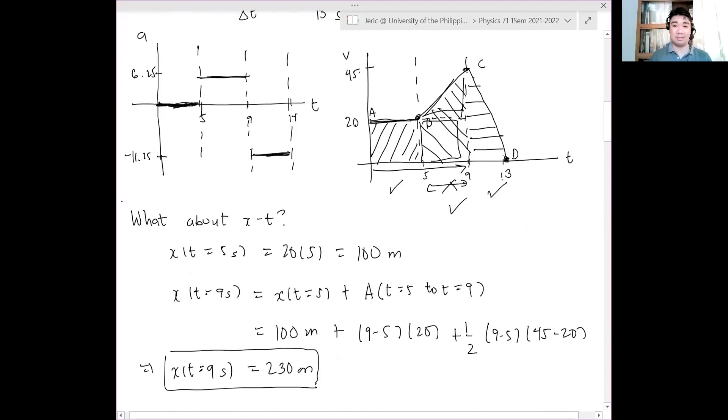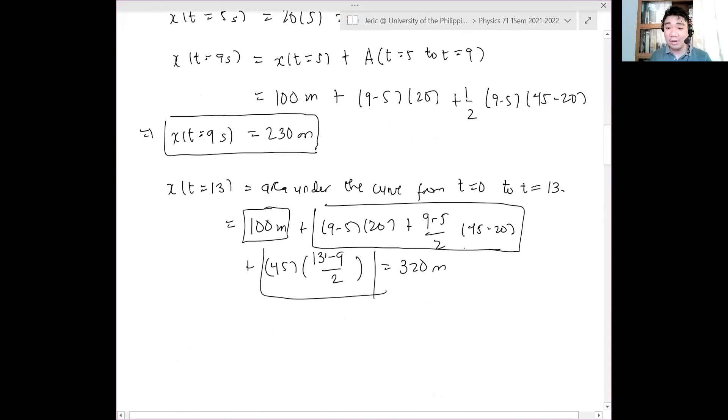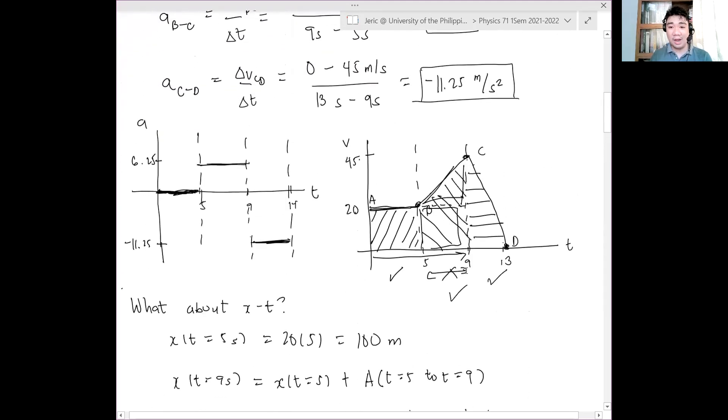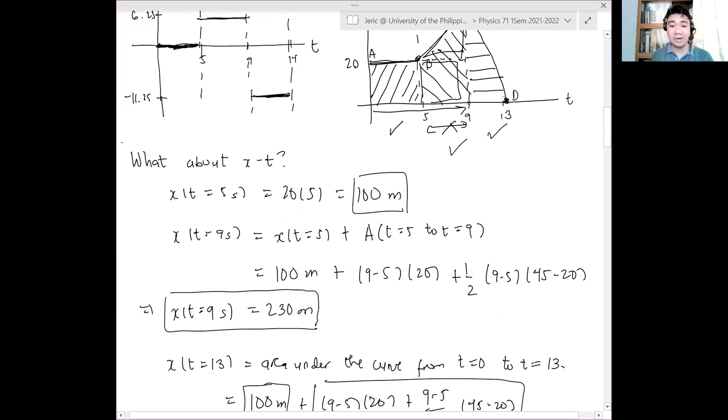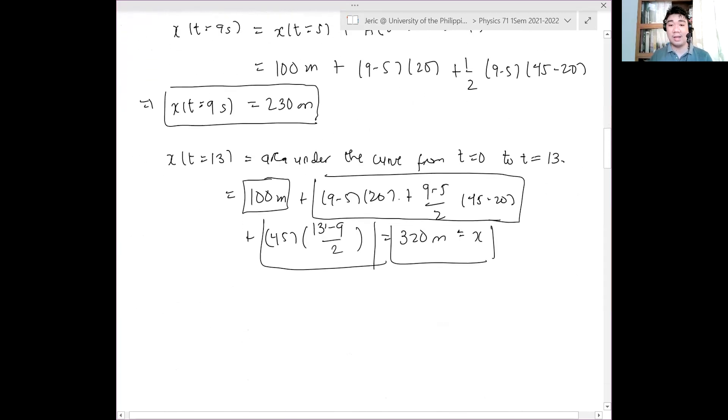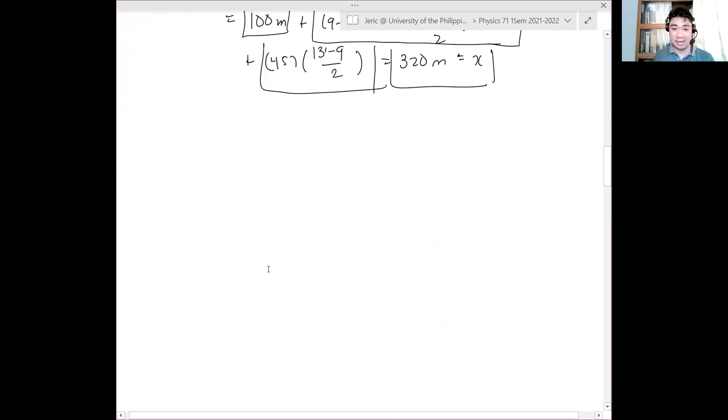So now we have three values. How do you plot it? Let me plot it. This is t, this is x. We reached 320, so I'll mark by 50s: 50, 100, 150, 200, 250, 300, 350. And then 1, 2, 3, 4, 5, 6, 7, 8, 9, 10, 11, 12, 13.